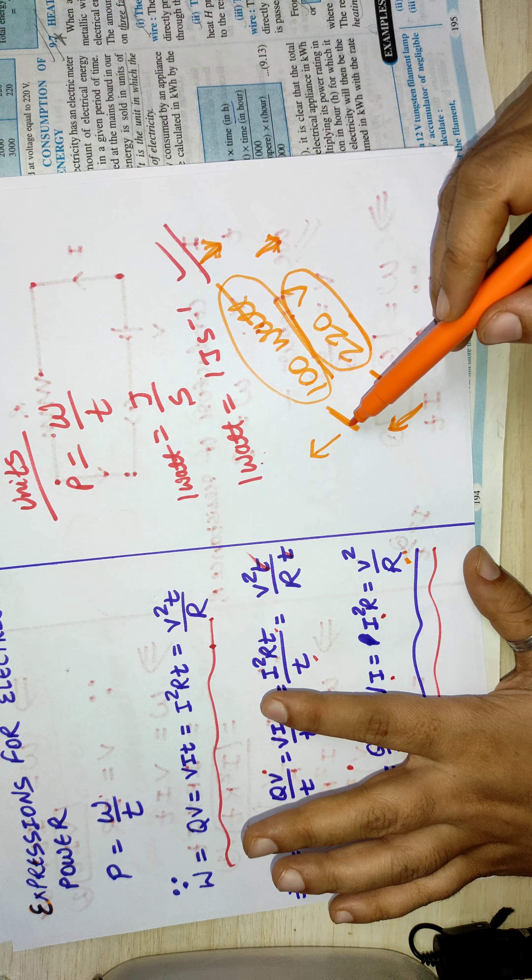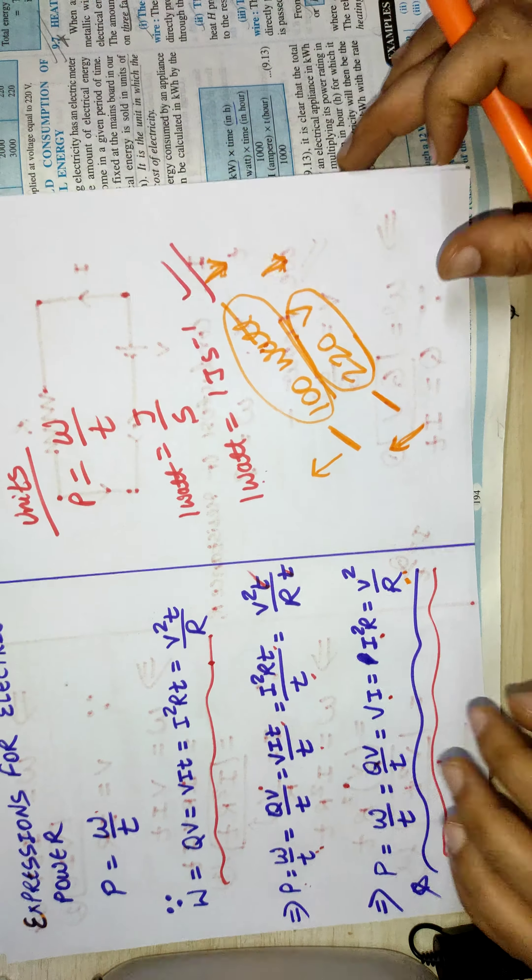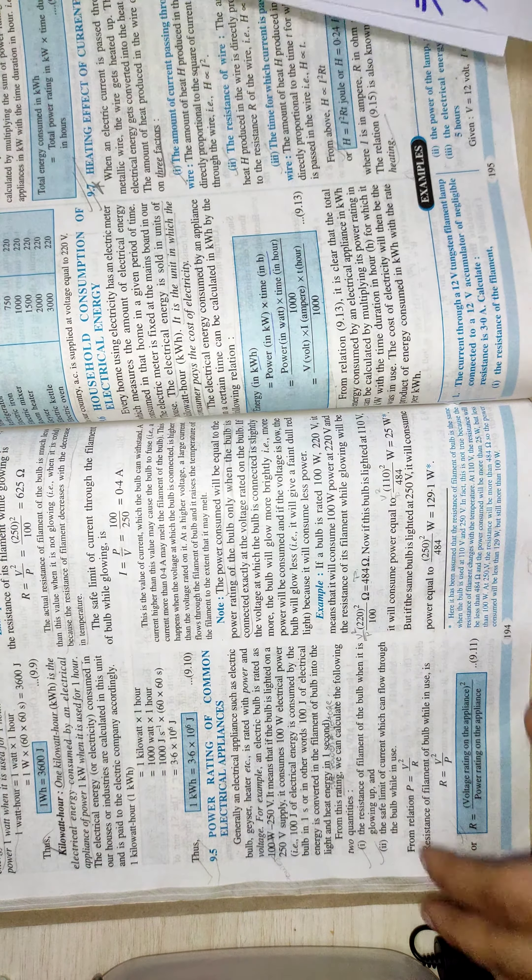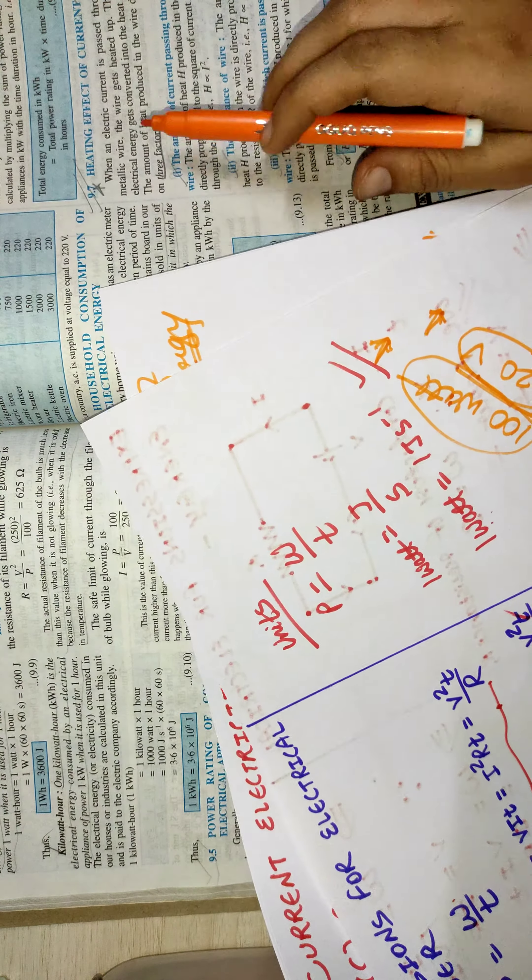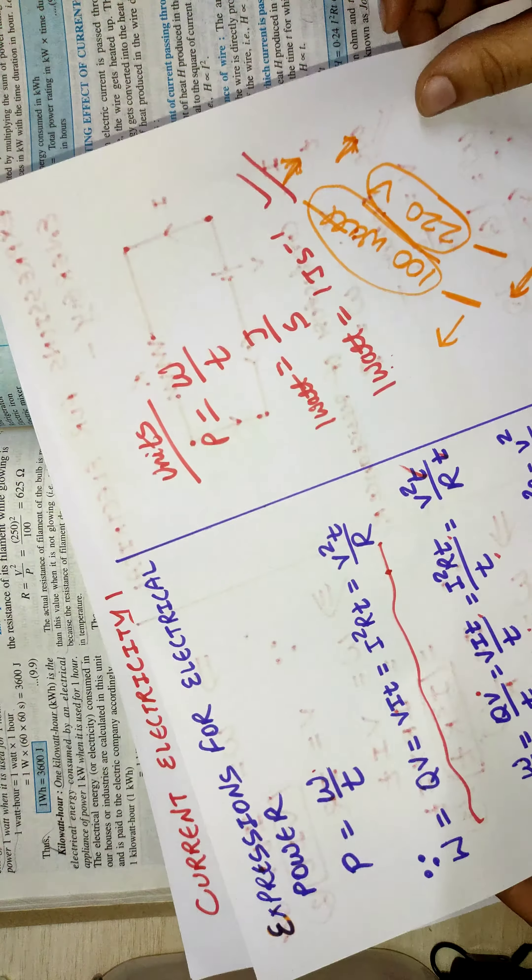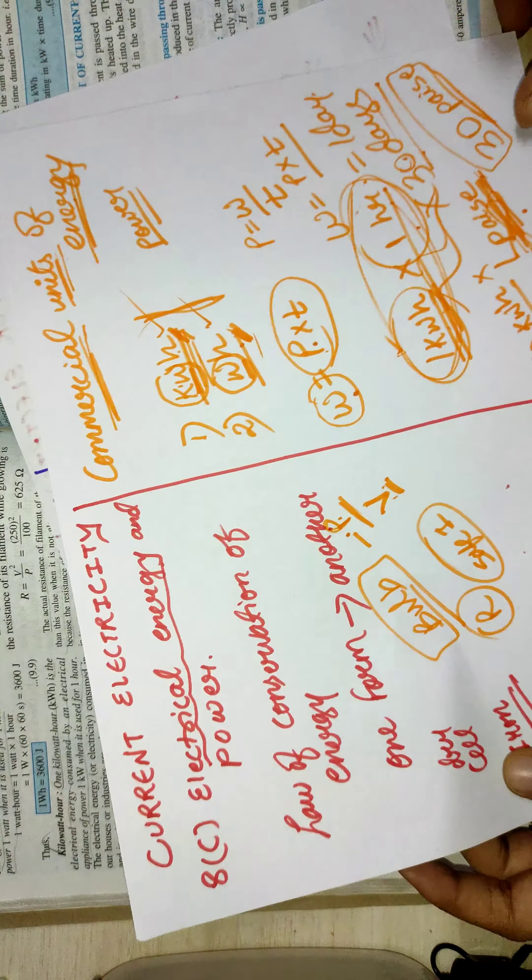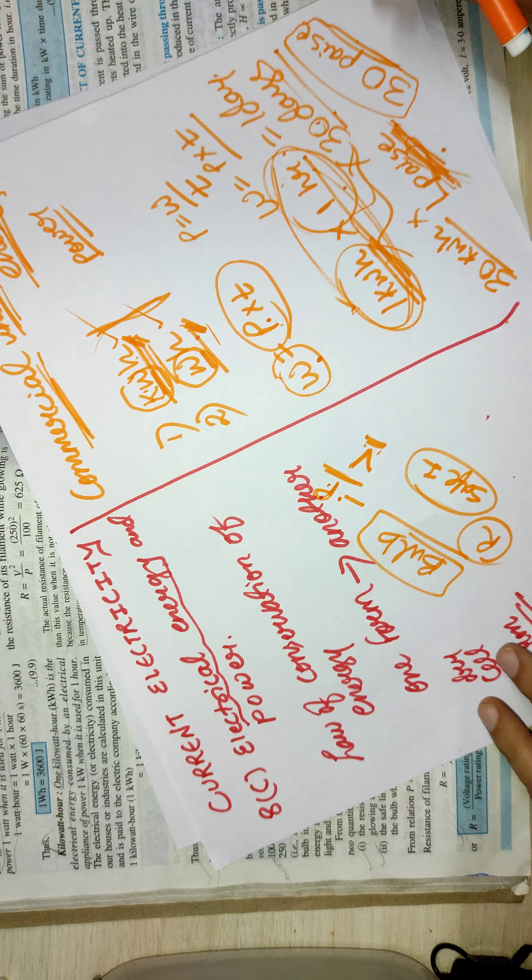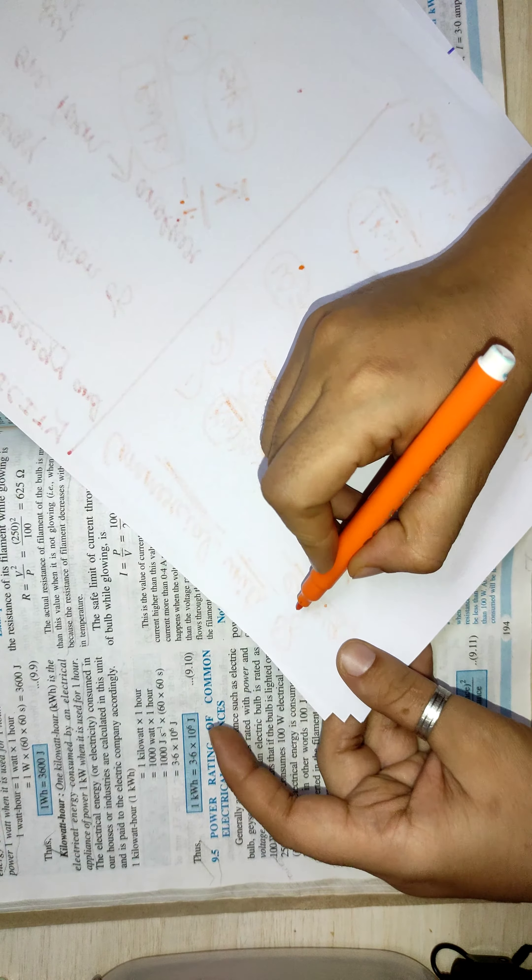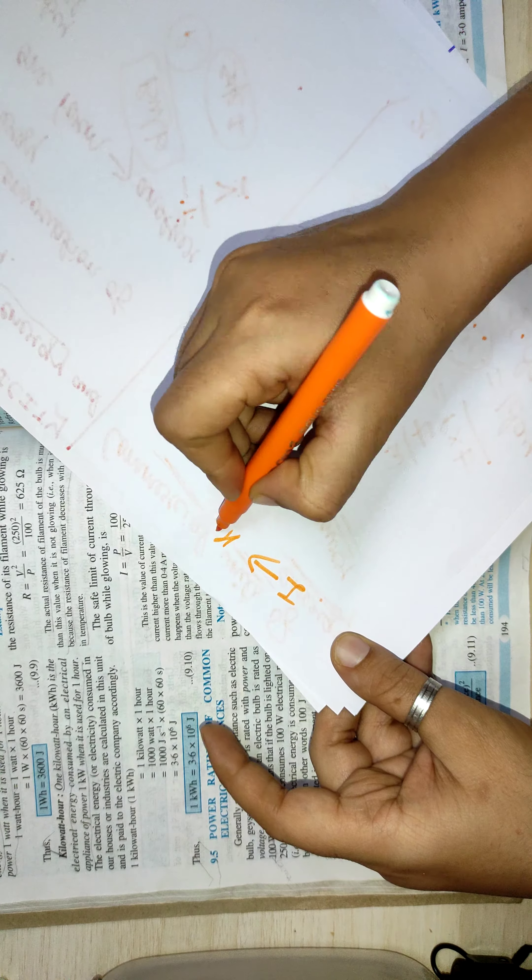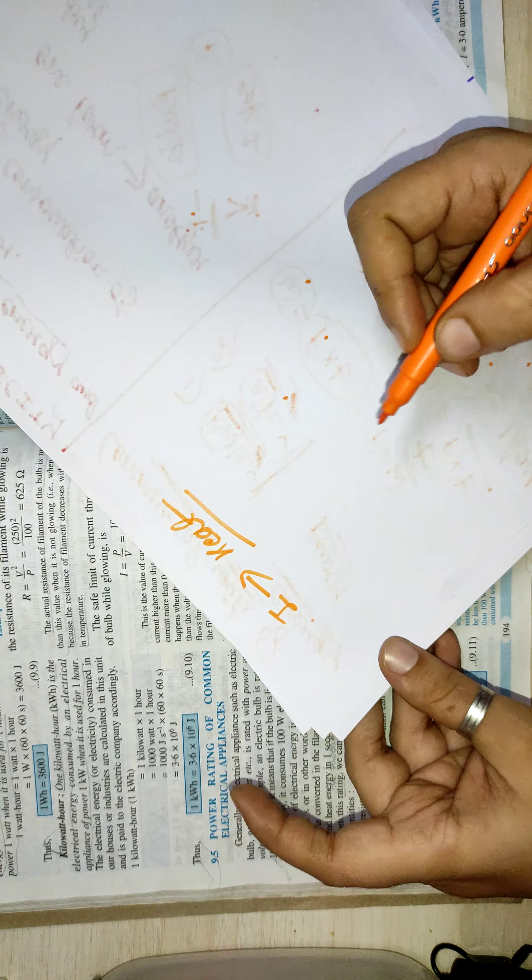Then these all topics are covered here. The last topic is heating effect of current. According to heating effect of current, whenever current is flowing in a conductor or a wire, it produces heat. Whenever the current is there, that will produce heat through that wire or conductor.